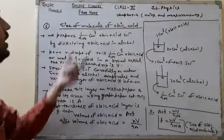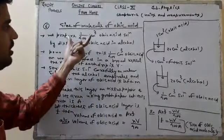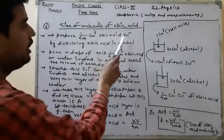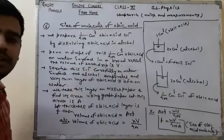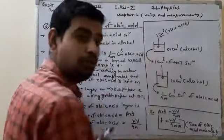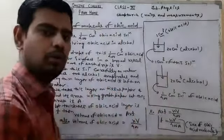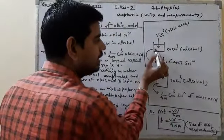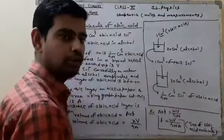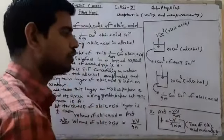The sixth indirect method is to find the size of a molecule of oleic acid. It is a large process, so I am discussing it step by step. First of all, we prepare a 1 upon 400 cm³ oleic acid solution by dissolving oleic acid in alcohol. We take 1 cm³ volume of oleic acid and pour it in 20 cm³ of alcohol. Then we take 1 cm³ of this mixed solution and dissolve it in 20 cm³ of alcohol. Now the mixed solution will be a 1 upon 400 cm³ solution of oleic acid.